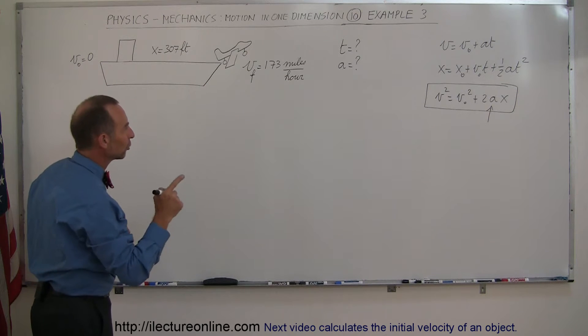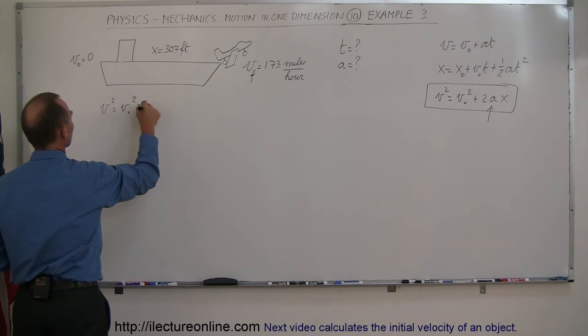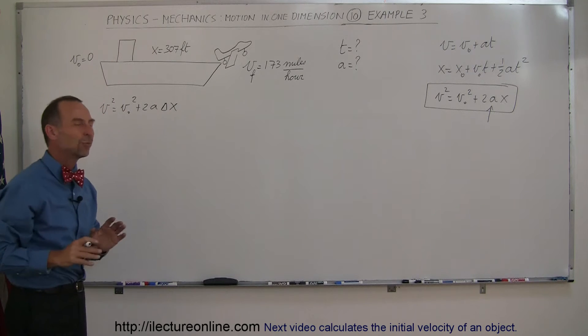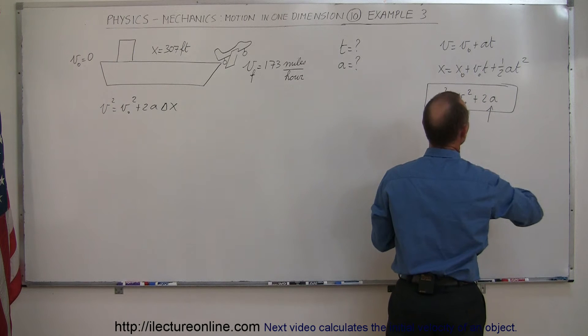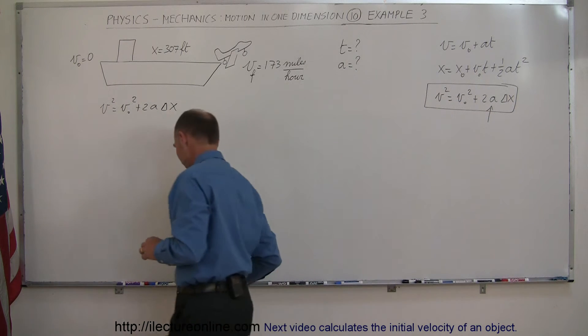So I'm going to use that equation to solve for A. V squared equals V initial squared plus 2A times the distance traveled. I did write X, but we should probably write delta X, the amount of distance traveled. It doesn't really matter if you use delta X or X. It's whatever you feel most comfortable with.